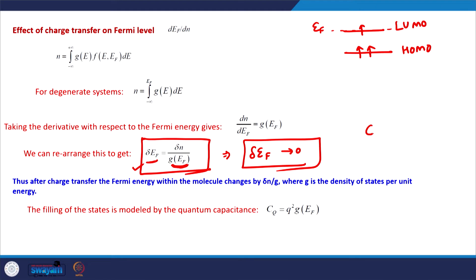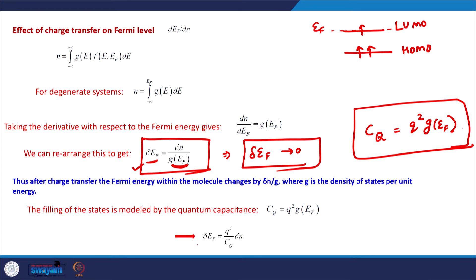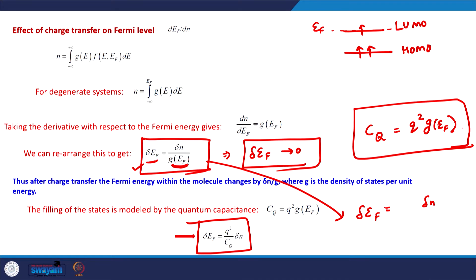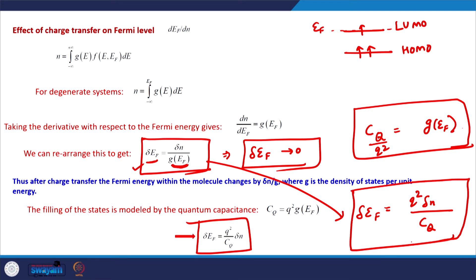The quantum capacitance is defined as CQ = q² × D(EF) — the density of states at the Fermi level times the charge squared. This means δEF = δN / G(EF) can be written as δN × q² / CQ, so δEF = δN × q² / CQ. This is the relationship between δEF and quantum capacitance, and it is the capacitive effect corresponding to: capacitance is defined as the change in potential of a system as the system is charged or discharged.